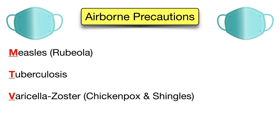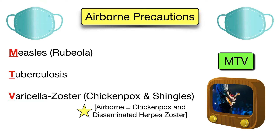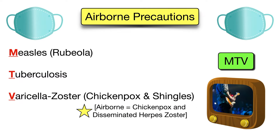Let's start with airborne precautions because they're the easiest to remember. The diseases that require airborne precautions are measles, also known as rubeola, tuberculosis, and varicella zoster virus, which causes chickenpox and shingles. The easiest way to remember these is to use the mnemonic MTV — M for measles, T for tuberculosis, and V for varicella. Airborne precautions for varicella zoster include anyone with chickenpox and those with disseminated herpes zoster, which is shingles affecting three or more dermatomes. A small episode of shingles in someone with a competent immune system does not require airborne precautions, but does require contact precautions.